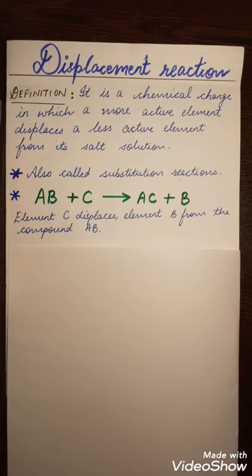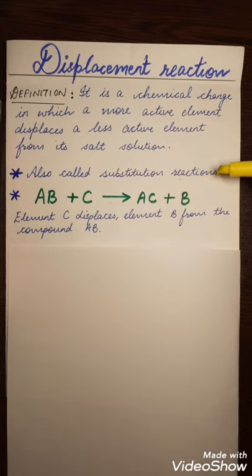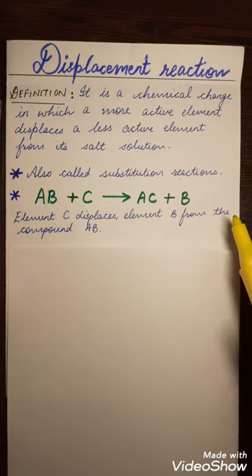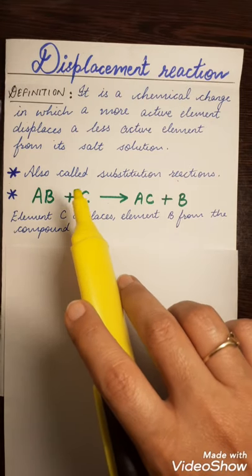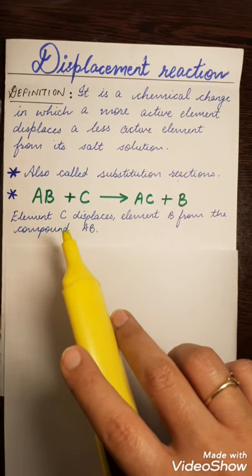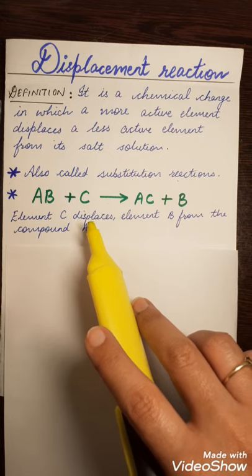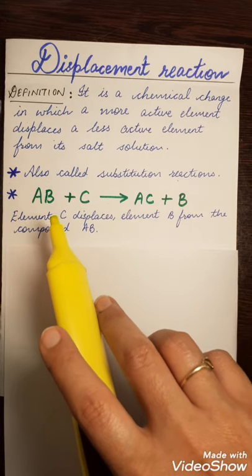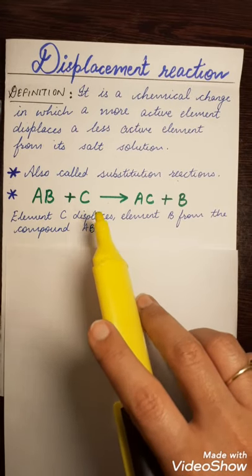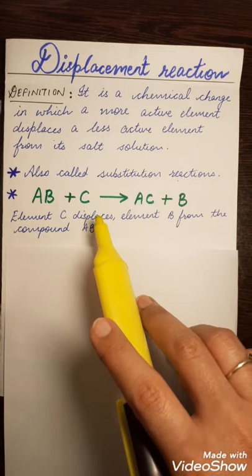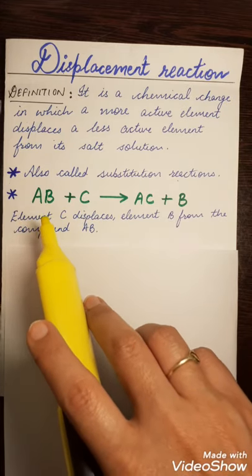Can you tell me what is displacement reaction? Displacement reaction is a chemical change in which a more active element displaces a less active element from its solution. This is also known as substitution reaction. This reaction can be represented by a general chemical equation: AB + C → AC + B. Here element C has displaced element B from compound AB because element C is more reactive than element B, and hence C displaces B from AB compound. C is the displacing element and B is the element being displaced.